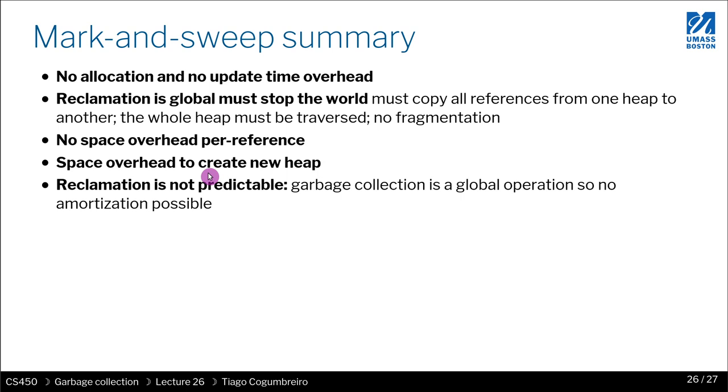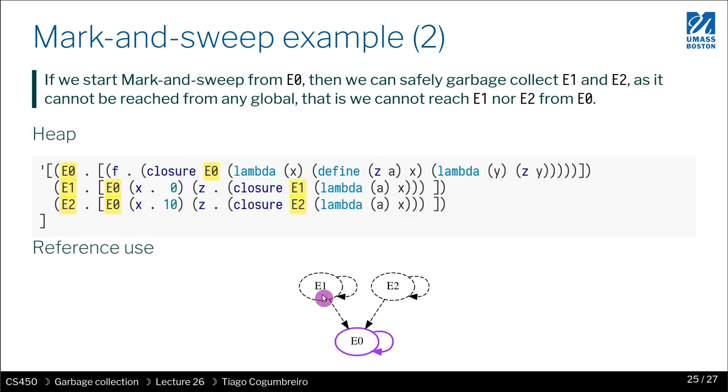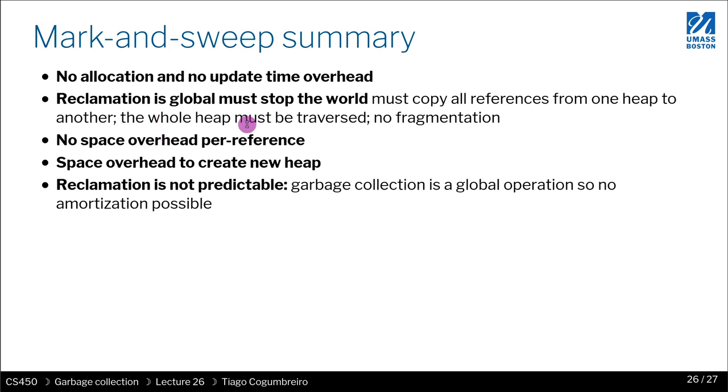The nice thing about the mark-and-sweep algorithm is as follows. First, there is no need for allocation. You can simply mark which locations you need. You don't need to have an additional per reference something to help your algorithm. You just use the graph that is given directly by the reference already in your data structures. So you don't need space overhead, because you can do everything in place.